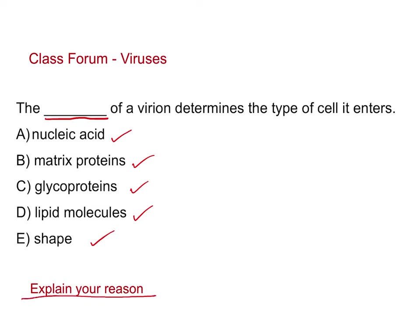For the class forum, I've already created a virus forum for you to answer this question: the blank of a virus determines the type of cells it enters. Options are: nucleic acid, matrix protein, glycoprotein, lipid molecules, and shape. Which determines the type of cell a particular virus will enter? Make sure you explain your reasoning. Go to the forum and answer that question, then come back and look at the next video as we go through animal viruses — and I will talk a little bit about coronavirus.